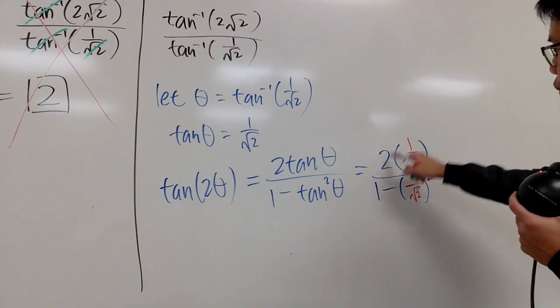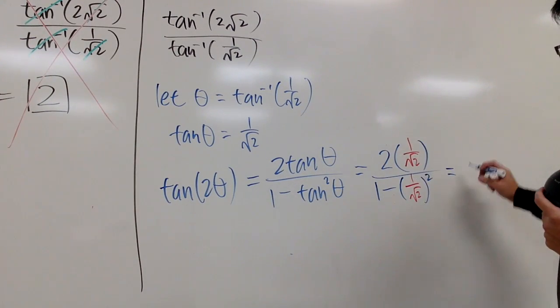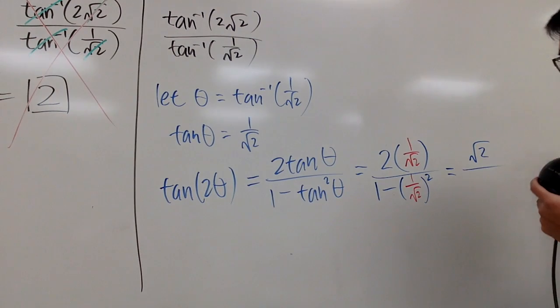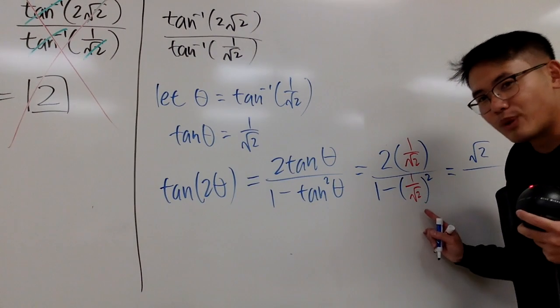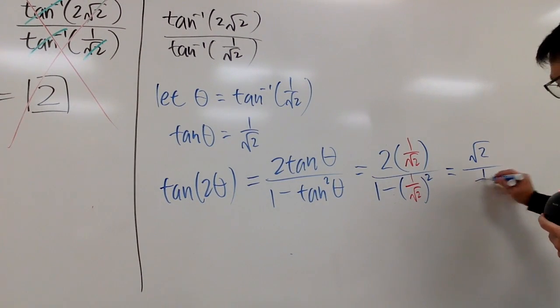And, as you can see, on the top, 2 times 1/√2, you can simplify that, you end up with √2. And then, on the bottom, 1/√2 squared, you get 1/2. 1 minus 1/2 is 1/2. So, this right here is 1/2.